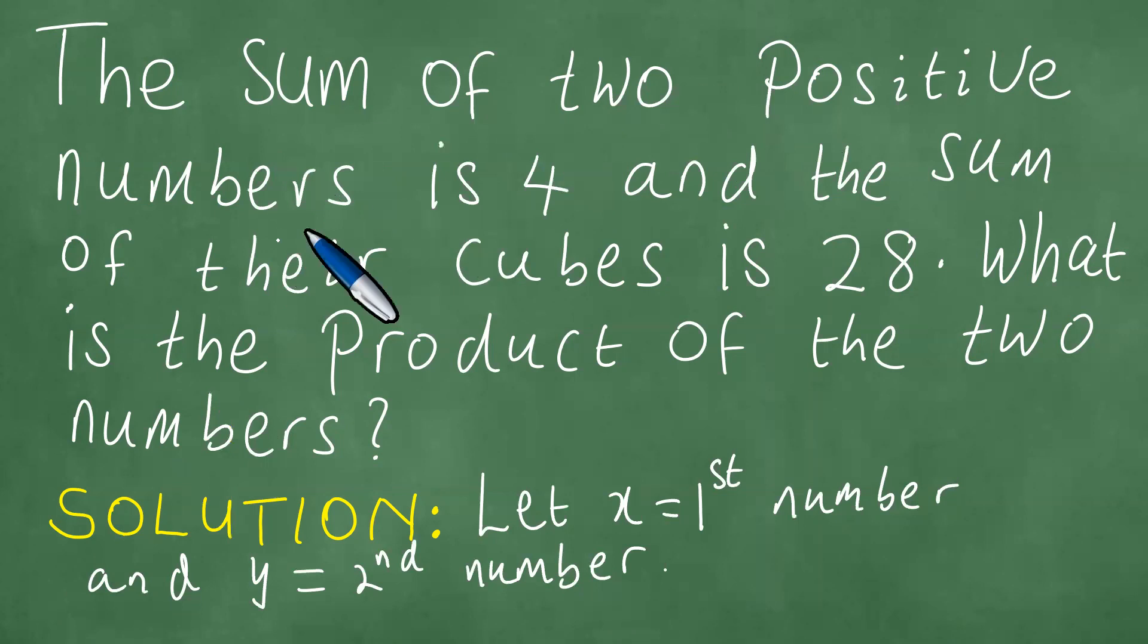The sum is 4, and the sum of their cubes is 28. That means the sum of x and y is 4, and the sum of their cubes is 28. You can call this one equation 1, and call this one equation 2.